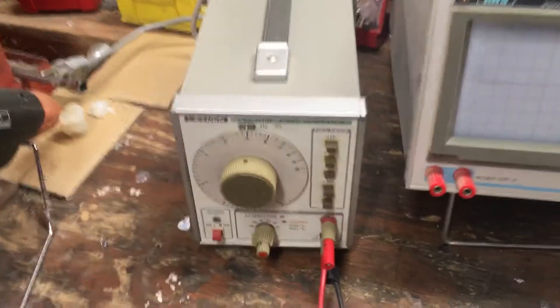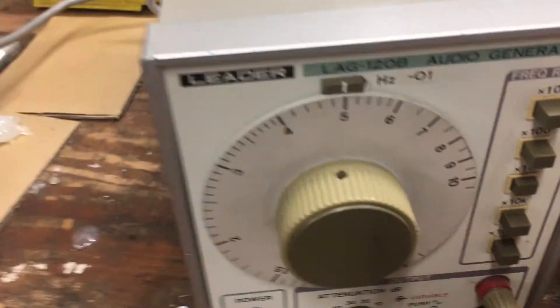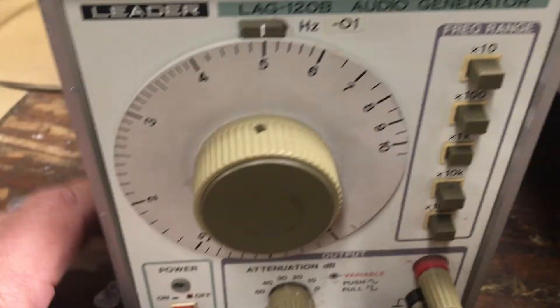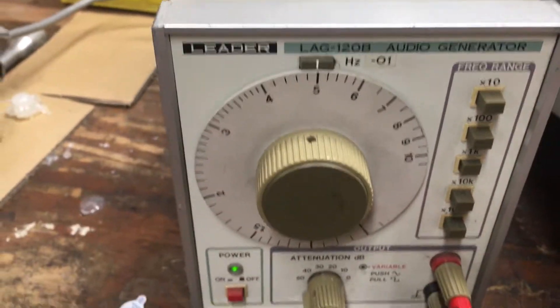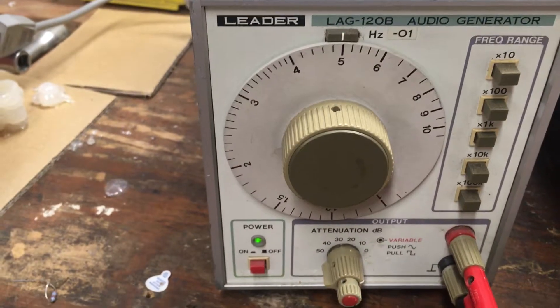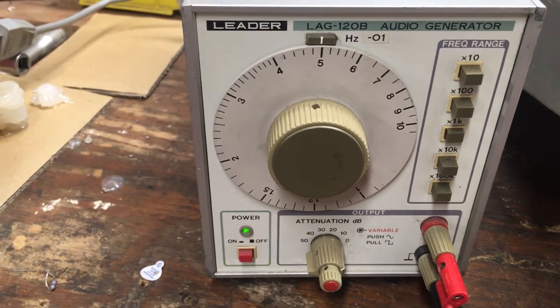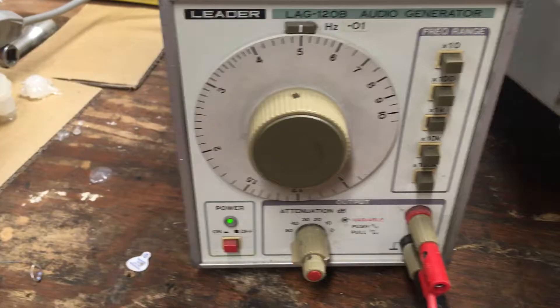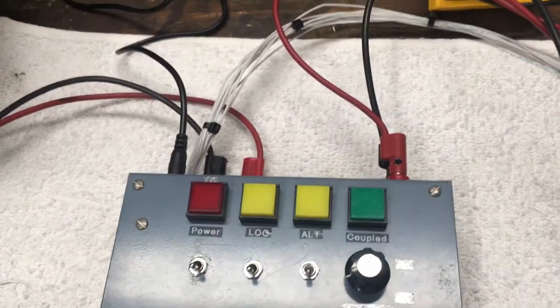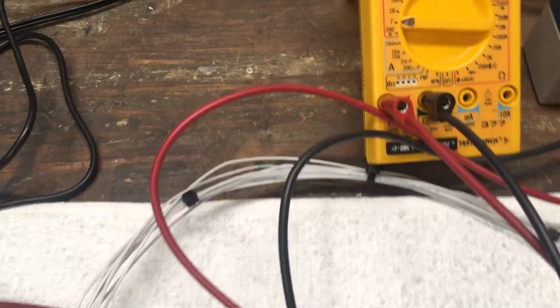I'll show you the setup here. We're going to need an excitation signal of 5 kilohertz, 10 volts peak-to-peak sine wave. We're going to put that into the tester, and then we've got a voltmeter hooked up to the glide slope voltage.